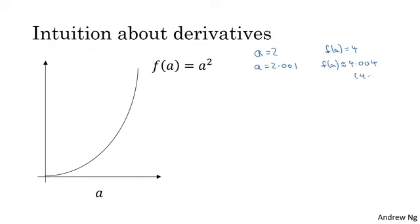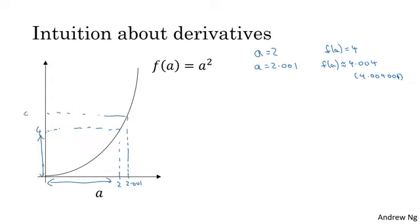It turns out that the exact value, if you pull up a calculator, is actually 4.004001. But I'm just going to say 4.004 is close enough. So if a is equal to 2, then f of a is equal to 4. The x and y axes are not drawn to scale — technically this vertical height should be much higher than the horizontal height. But if I now nudge a to 2.001, then f of a becomes roughly 4.004. So if you draw this little triangle, what this means is that if I nudge a to the right by 0.001, f of a goes up 4 times as much, by 0.004.